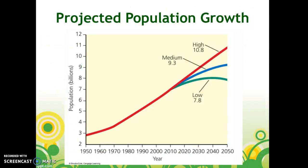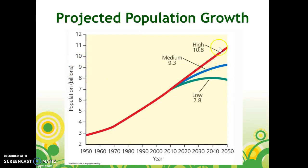This figure looks at our projected population growth. Our median projection, as mentioned, is 9.3 billion. The high projection just continues on an upward pathway. And then our low projection is 7.8 billion — and that's if we seriously put in some population control initiatives.